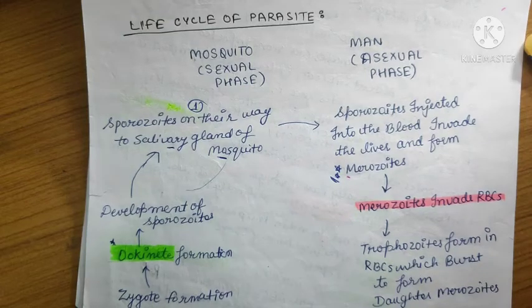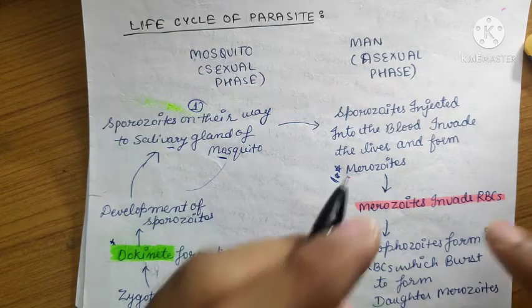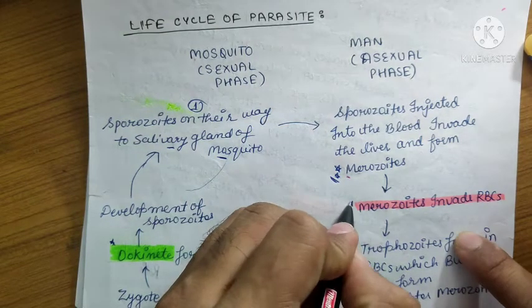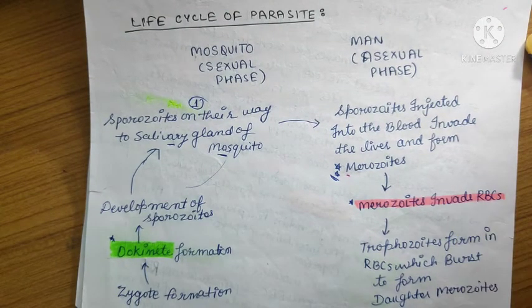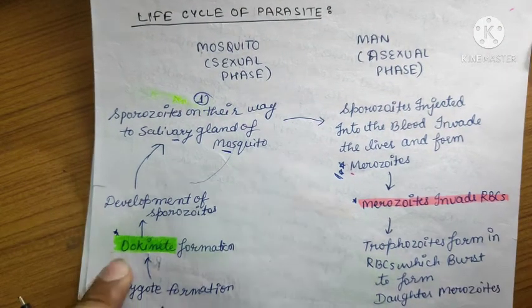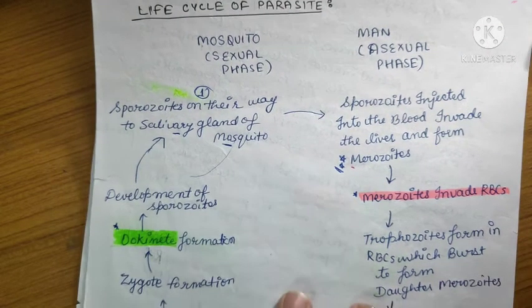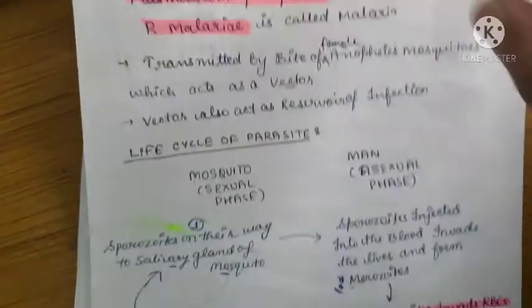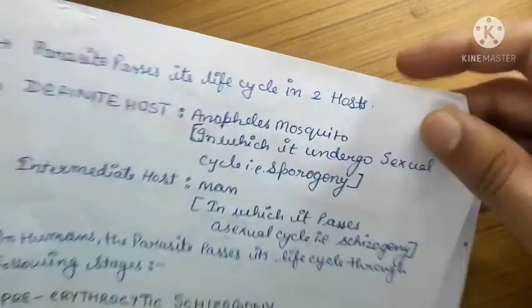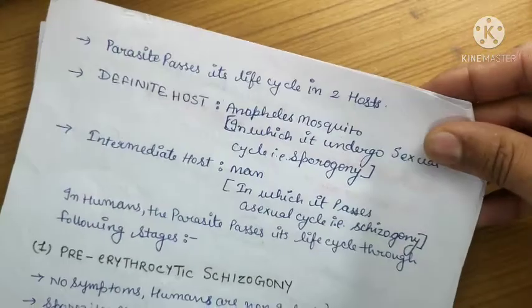The sporozoites stored in the salivary gland again go on to form merozoites. So the two important steps are: first, the merozoite invades the RBC; second, the gametocyte forms; and third, the ookinete and oocyst serve as the reservoir of the malarial parasite.